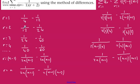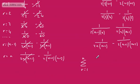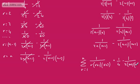Everything in the middle cancels out — this term goes with that one, and so on. All we are left with is the sum from r=1 to n of 1 over r(r+1)(r+2) equals 1/4 minus 1 over 2(n+1)(n+2).